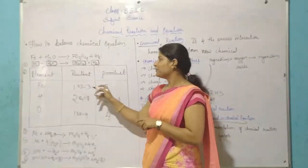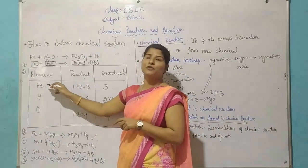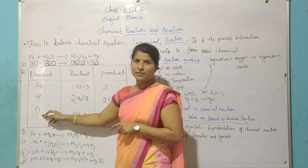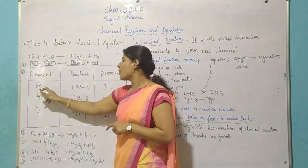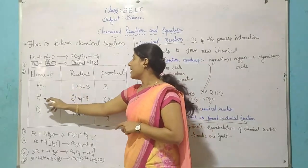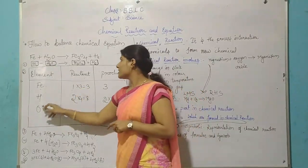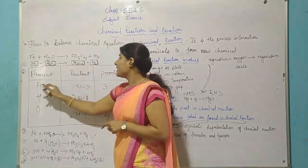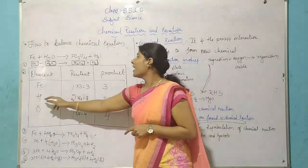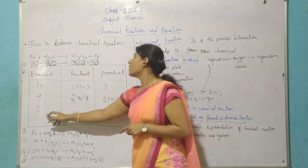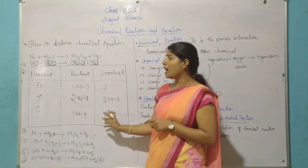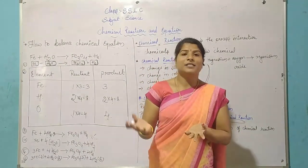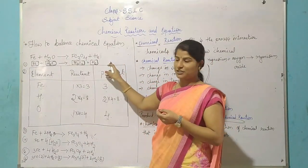We write inside the boxes how many of each element are present in the equation. The elements present are Fe, hydrogen, and oxygen. On the reactant side: Fe = 1, hydrogen = 2, oxygen = 1. On the product side: Fe = 3, hydrogen = 2, oxygen = 4. We then multiply based on the highest number of an element — in this case oxygen, which is 4 on the product side.